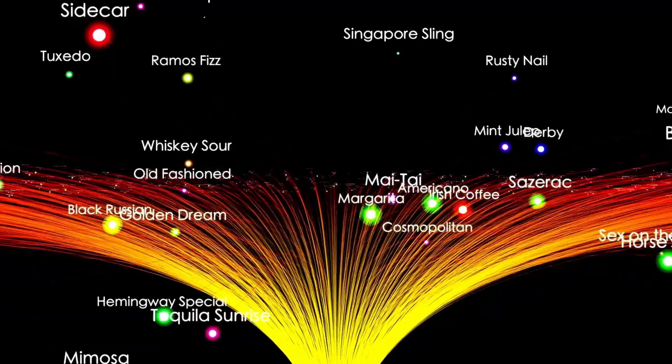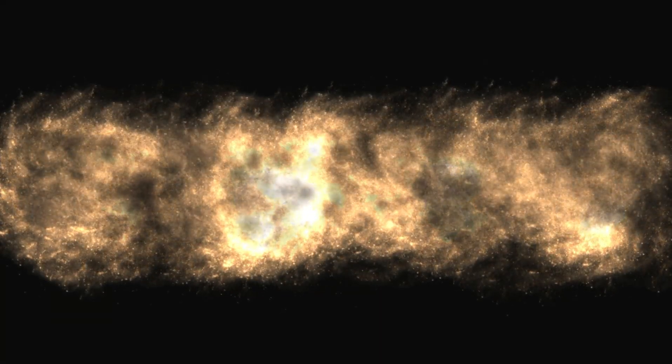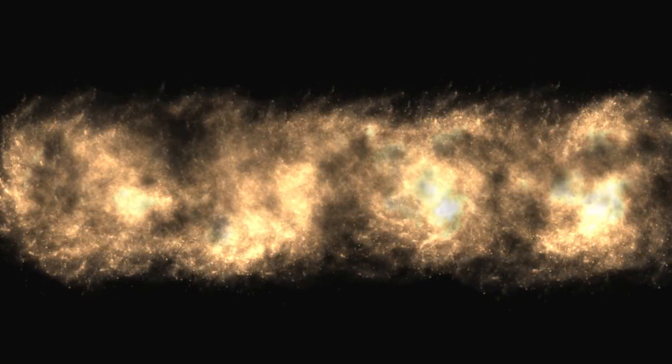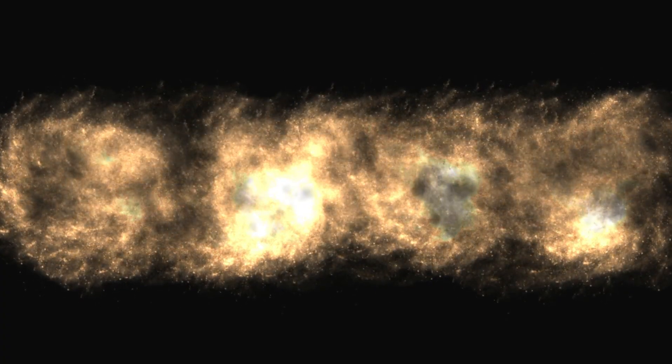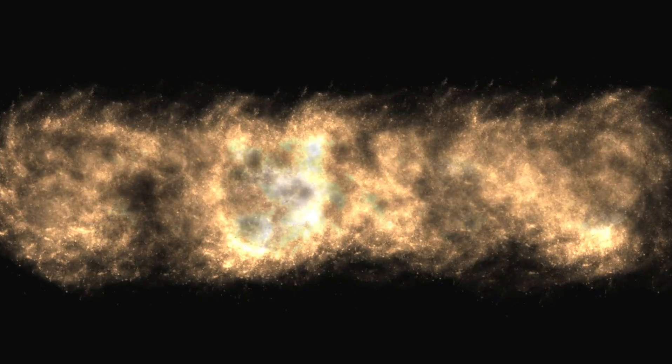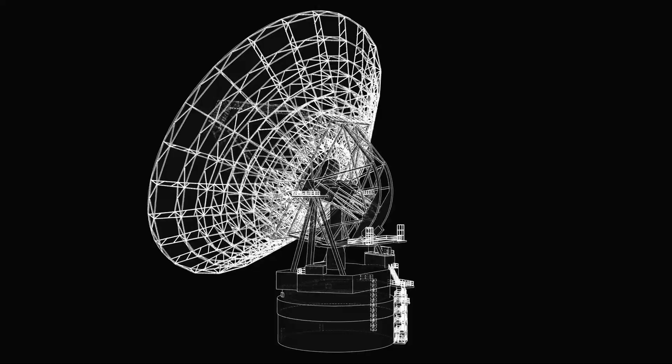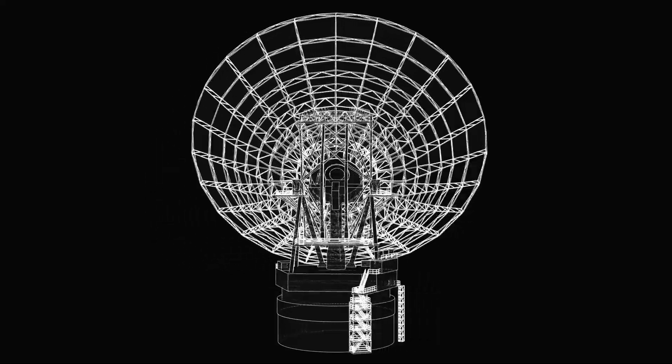So the heliopause itself changes all the time, moving sometimes by billions of miles. Measurements of the magnetic field showed that the interstellar field is directed differently from the magnetic field of the sun, producing a twisting, reforming boundary.